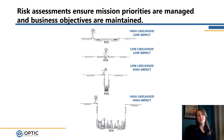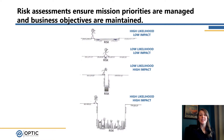Once we understand what our risks are, we need to think about how that's going to impact our business. We've got a few examples here — really thinking through what is the likelihood of that risk occurring and if it was to occur, how bad would it be. On the screen I have examples of somebody walking down the road and finding a pothole, or in some cases a much larger chasm. In the first example at the top, there's a high likelihood they're going to have to step into that hole, but it'll be a low impact — they'll be able to keep moving along.